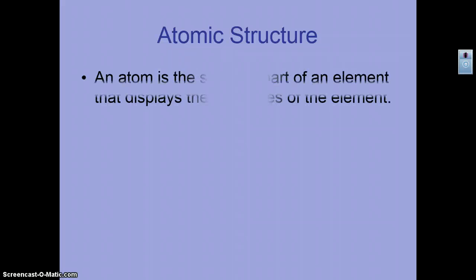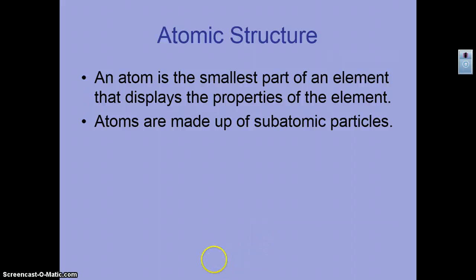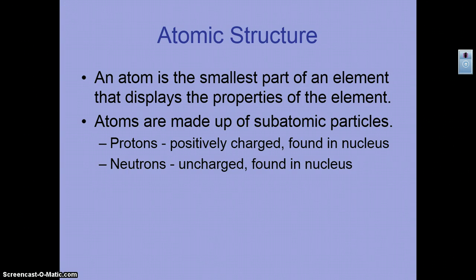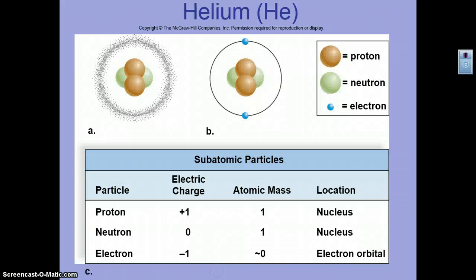Atomic structure — quick review. The atom is the smallest part of an element that has the same properties of that element. Atoms are made up of smaller particles: protons, which are positively charged and found in the nucleus; neutrons, which are not charged and also found in the nucleus; and electrons, which are negatively charged and move around the nucleus.